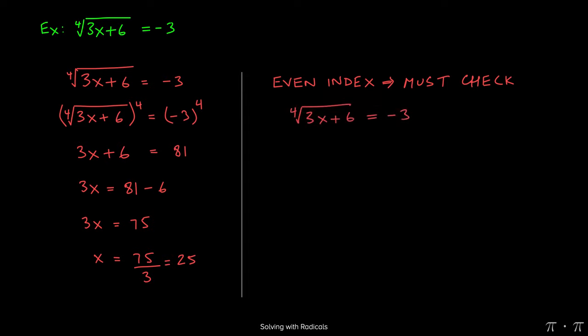So we start by writing down the original equation we were given, and then substitute 25 for the x. Again, we're writing a question mark above the equal sign, because we don't know that those two quantities are equal. We're trying to determine whether they are or that they're not.